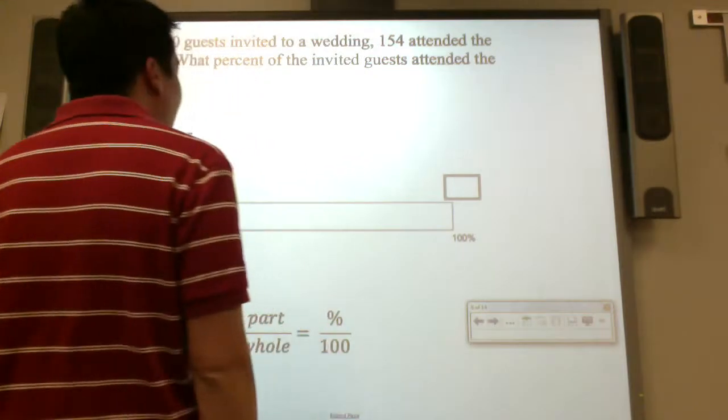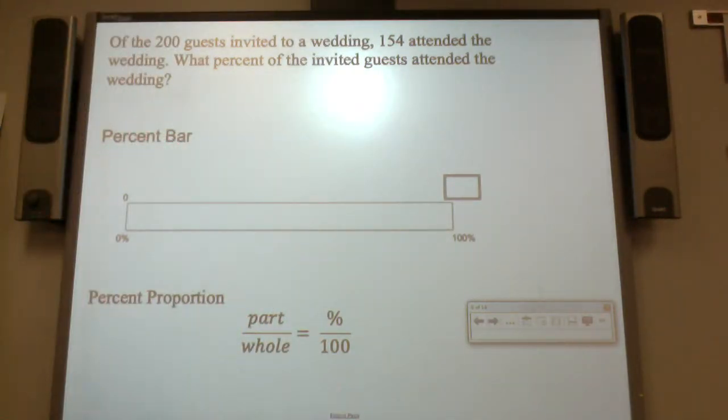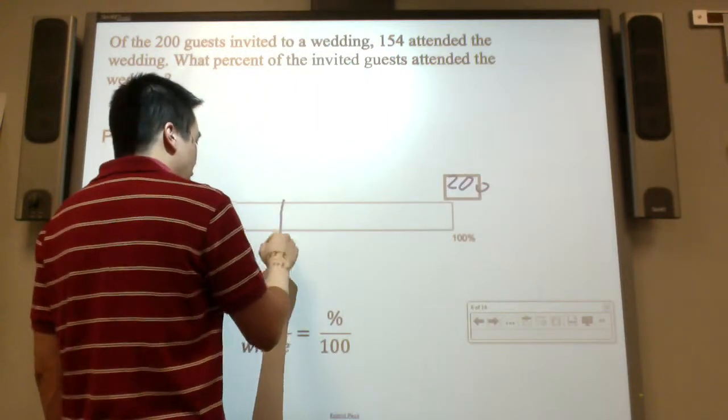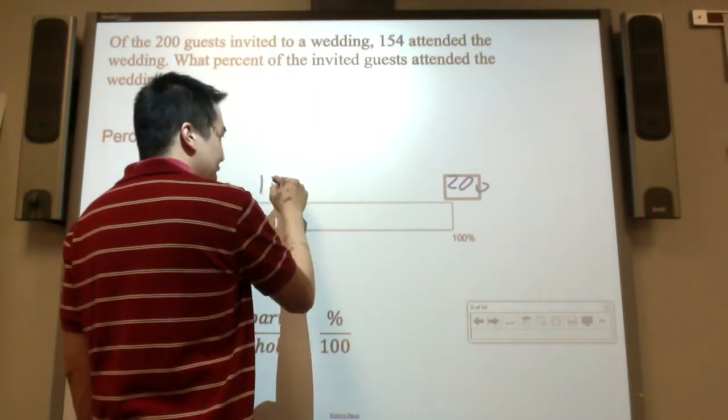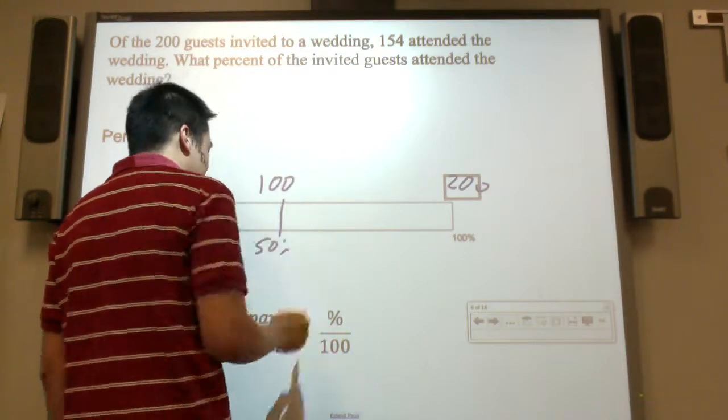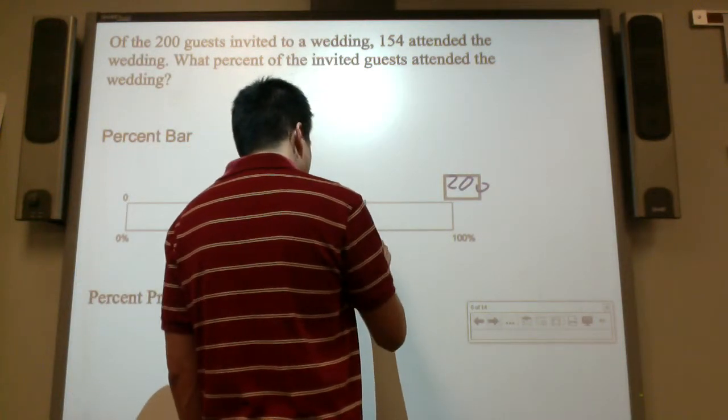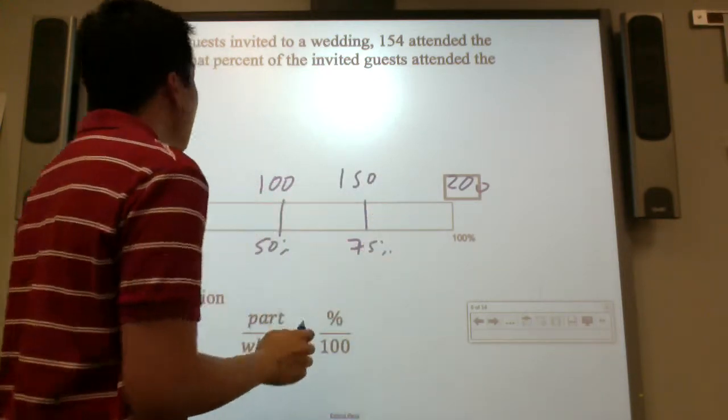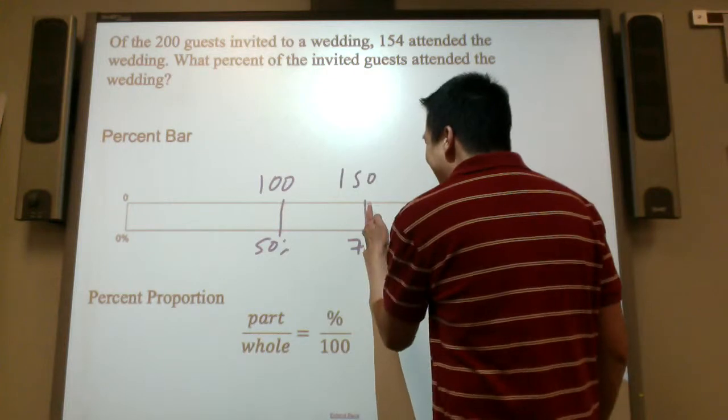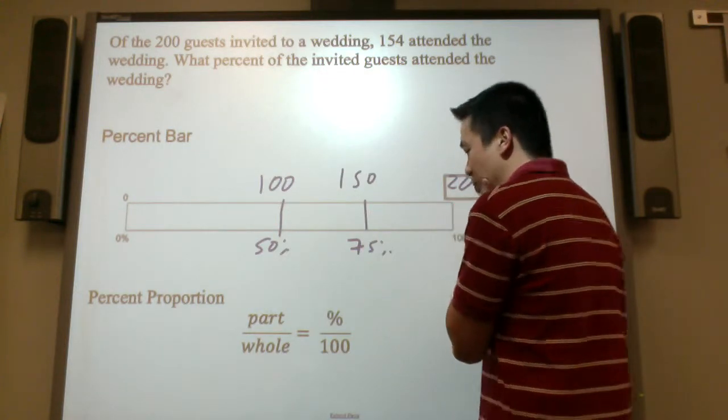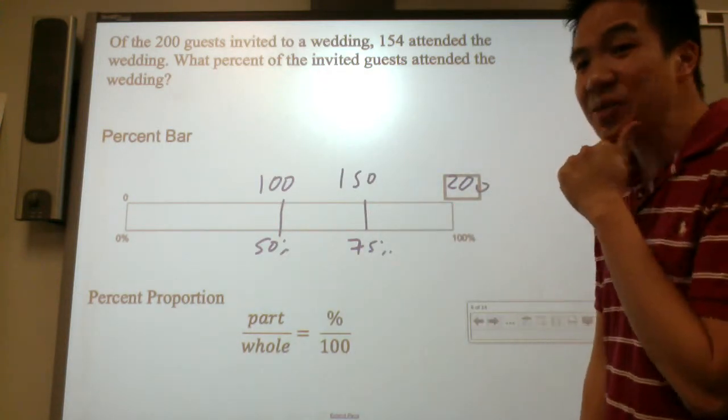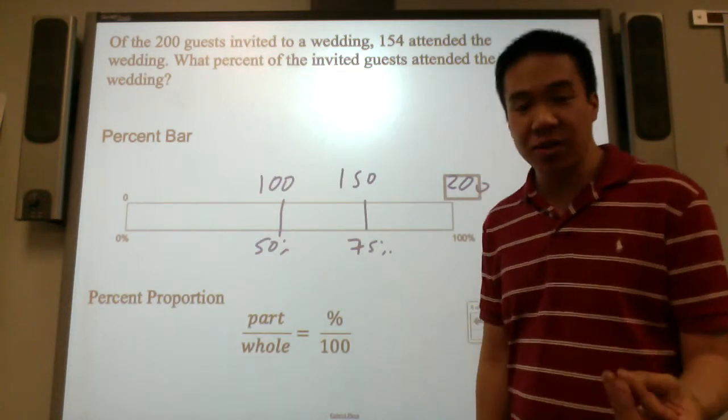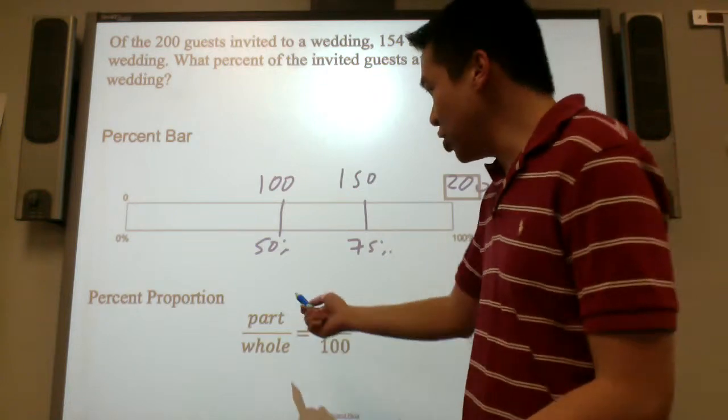Of the 200 guests invited to a wedding, 154 attended the wedding. We know 50% is 100 people. We know 75% would be about 150. So 154 attended. It's going to be a tad bit more than 75%. Sometimes picture form is not very exact. You can do a good approximate, but you might not get the exact answer.